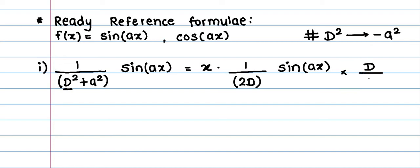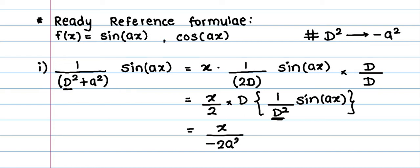We multiply numerator and denominator by d. So it is equal to x upon 2 into derivative of 1 upon d square sin A x. Here we can replace d square by minus A square. So it is equal to x upon minus 2 times A square into derivative of sin A x is A times cos A x.